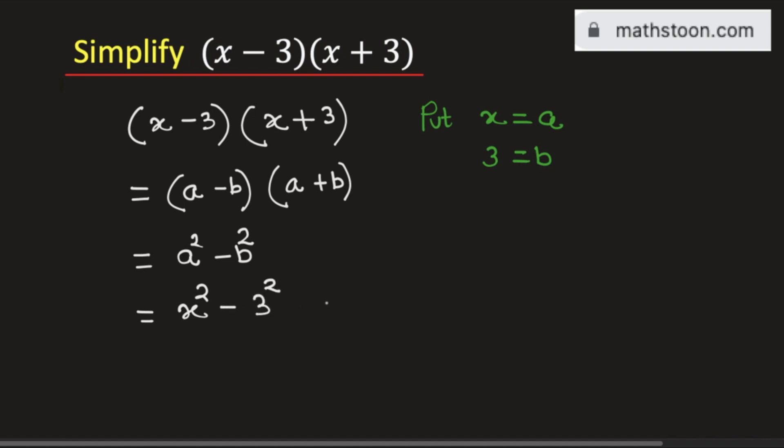As 3 square is equal to 9, so finally we get x square minus 9. This is the desired simplification of the given expression and this is our final answer.